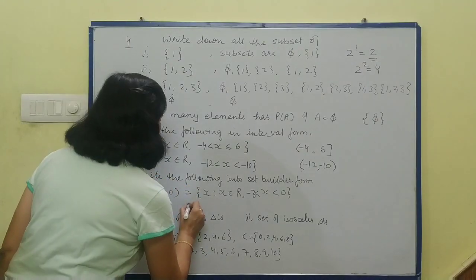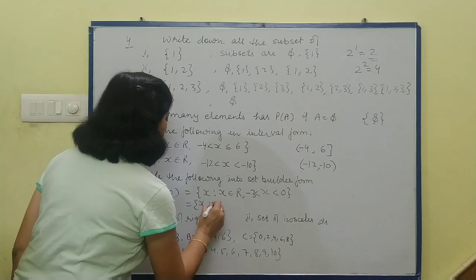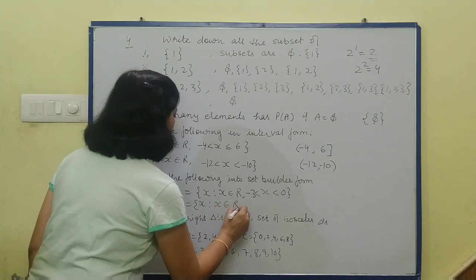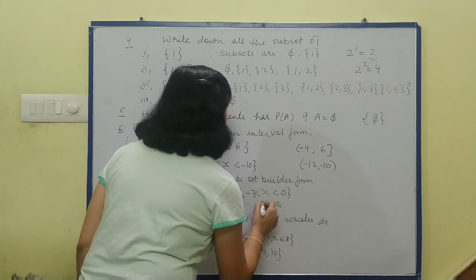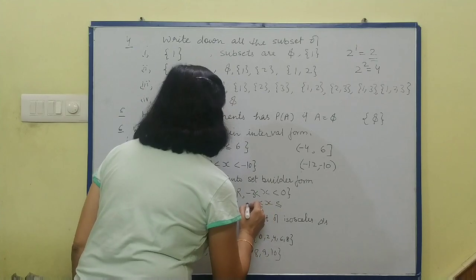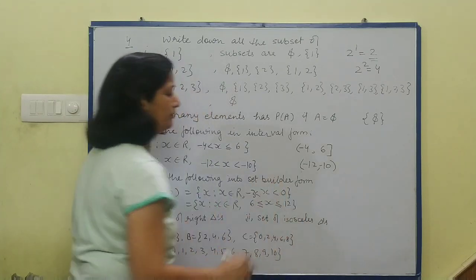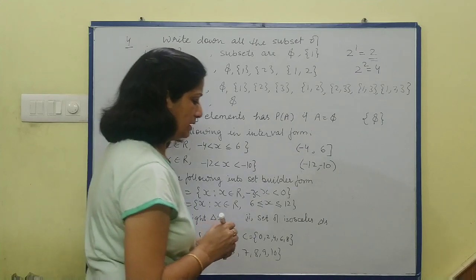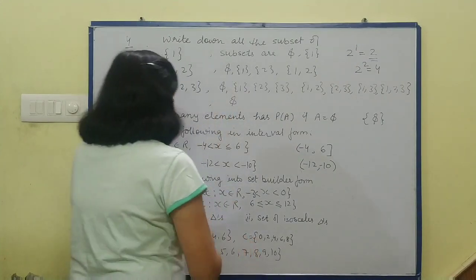Write the following in set builder form — interval को set builder में लिखना है: x such that x belongs to R. दोनों small brackets हैं यानि minus 3 और 0 पर equal apply नहीं करना. दोनों पर equal apply होगा — x such that x belongs to R and x lies and equals to 6 and 12.